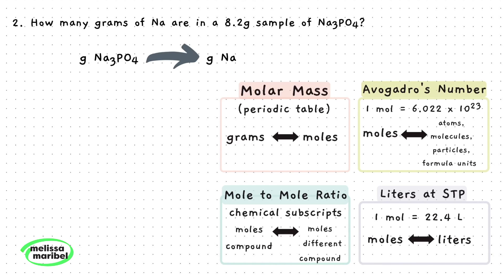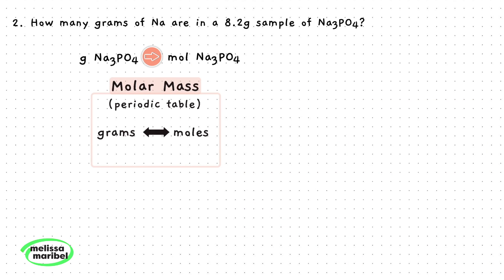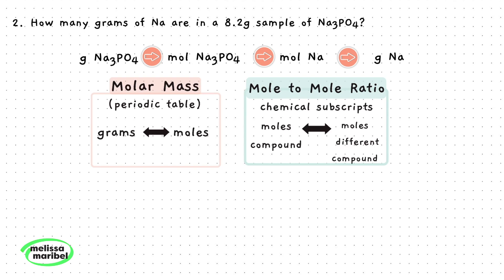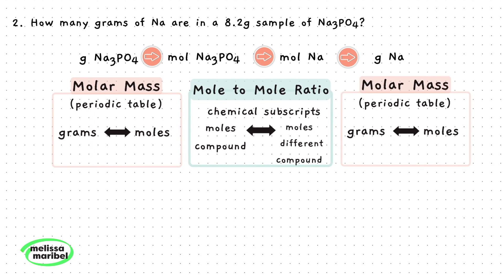Whenever we want to change the compound or element, we must use a mole to mole ratio. So we will start by going from grams of sodium phosphate, then convert to moles of sodium phosphate using the molar mass of sodium phosphate as our first conversion factor. Next, to change sodium phosphate to moles of sodium, we will use a mole to mole ratio. And finally, to convert moles of sodium to grams of sodium, we will use the molar mass of sodium as our next conversion factor.